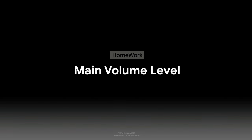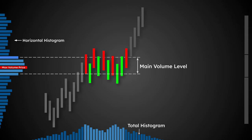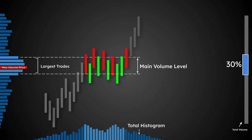How to identify the main volume level. The main volume level is the price range over a period of time — day, week or contract — where the total volume of all trades is 30% of the total volume of trades for the selected period. In simple terms, this is the price range, for example for a day, in which the largest trades were made.